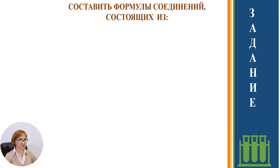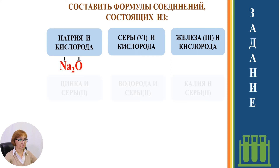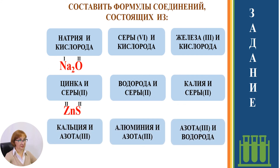Для закрепления выполните следующее задание. Составьте формулы оксидов, состоящих из: натрия и кислорода; серы с валентностью 4 и кислорода; трёхвалентного железа и кислорода. Рассмотрим пример: записываем знаки элементов, выставляем валентности, выставляем индексы. Следующий ряд: составить формулы из цинка и двухвалентной серы, водорода и серы, калия и серы. Цинк S: валентности одинаковые, индексы не выставляем. И ещё один ряд: вещества из кальция и трёхвалентного азота, алюминия и азота, азота и водорода. Записываем кальций, азот, расставляем валентности, выставляем индексы. Следующие формулы составьте самостоятельно.